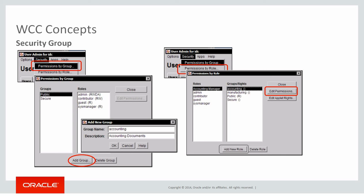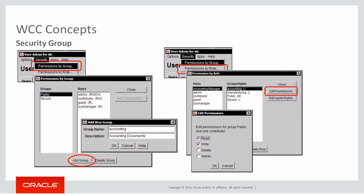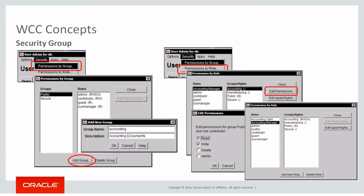Existing roles can be given permission to this group — you can click on 'Edit Permission' and provide permissions such as read, write, delete, etc. You can also create a new role, for example 'Accounting Clerk,' and add permissions for that role to the security group. This works very similarly to how the BI Publisher catalog works, where a folder is created, given permissions, and roles are added to the folder with defined permissions — either standard or custom permissions. Security group works using roles information.